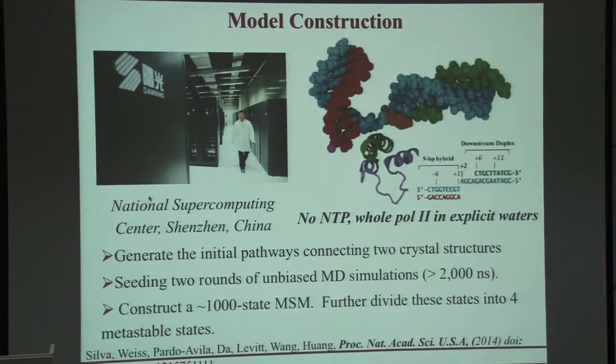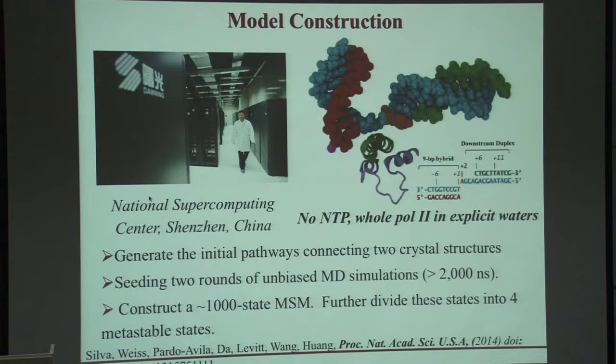All these simulations were performed at the supercomputer center in Shenzhen, China. We looked at the conformational change of RNA polymerase without NTP — molecular motions without the substrate — so the system can oscillate between the pre- and post-translocation state. The tricky part I want to emphasize is how to generate the initial pathway. At the beginning, we only have two crystal structures isolated in phase space. We used some non-equilibrium method to produce an initial pathway connecting the two crystal structures. Then, along the initial sampling, after a few rounds of unbiased MD simulations, we finally constructed a model with several states that can be further mapped into four metastable regions.